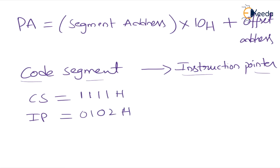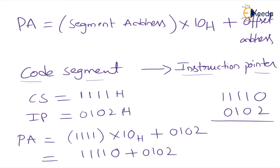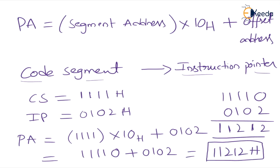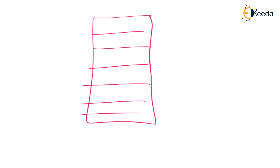Now calculate the physical address. Segment address is 2211H × 10H plus offset address 0102H. That equals 22110H + 0102H. Adding: 22110 + 0102 gives us 22212H. So the physical address is 22212H. What is the size of the physical address? It is 20 bit. By using this, we can access the address location.